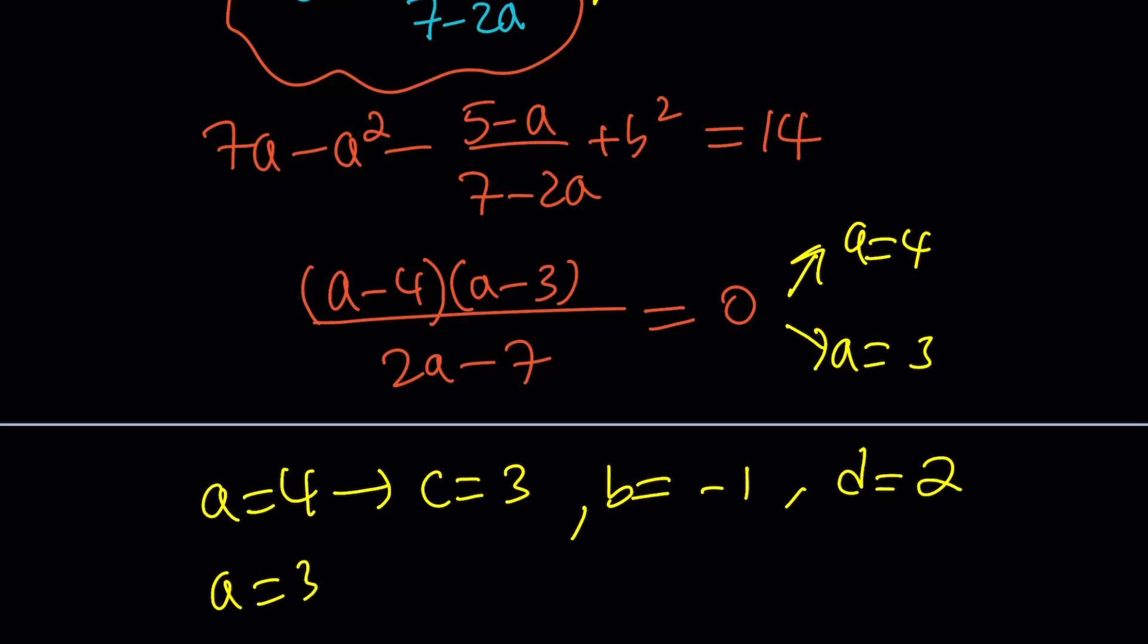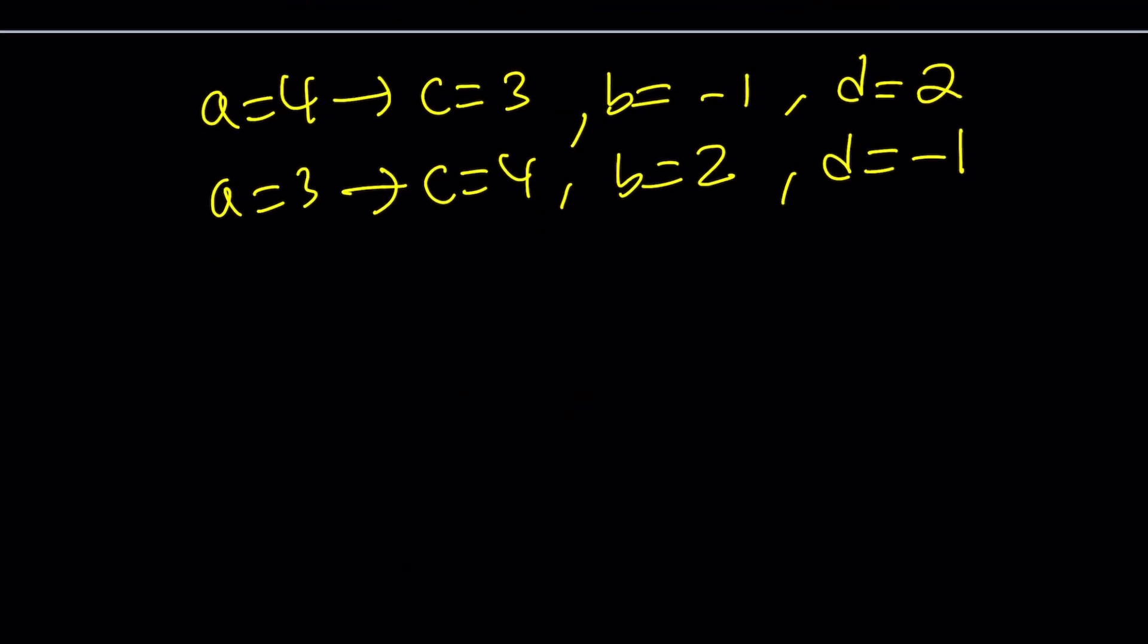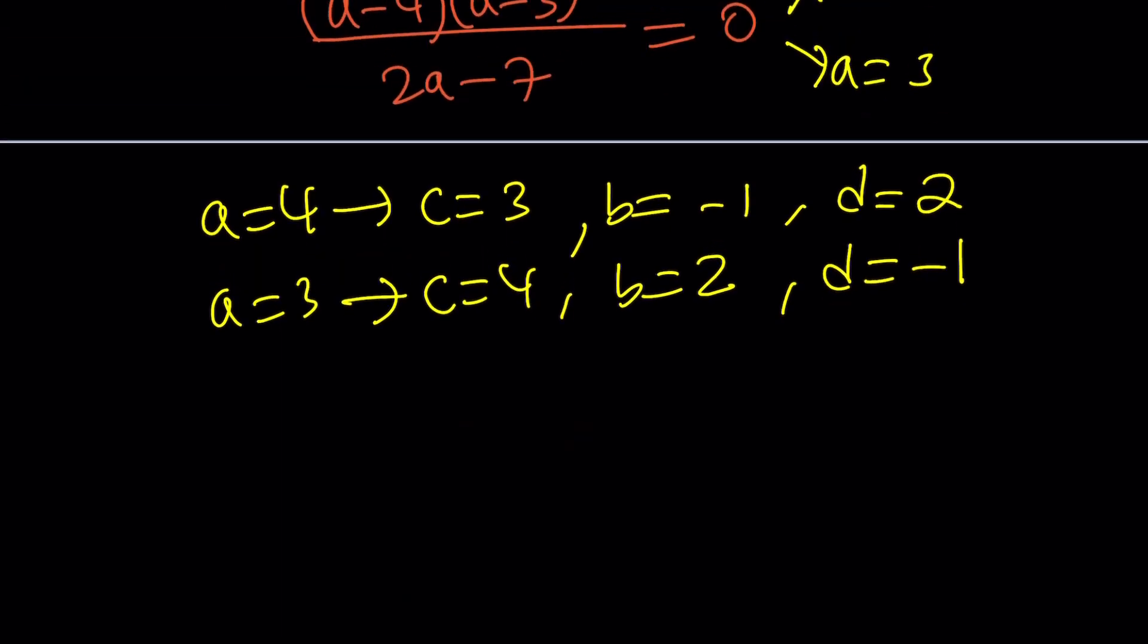If A is equal to 3, then from here we're going to get C is equal to 4, B is equal to 2, and D is equal to negative 1. Great. Now, since we got all these values from the system, we can go ahead and write our complex numbers.